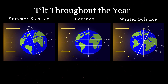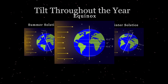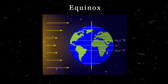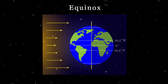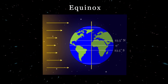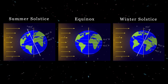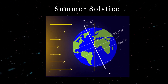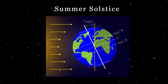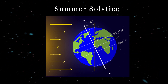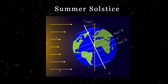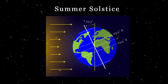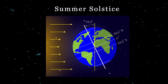If Earth was not tilted relative to its axis, then we'd have 12 hours of daylight and 12 hours of night every day on every part of Earth throughout the year, like we do on the equinox. But because of the 23.5 degree tilt of Earth relative to the orbital plane of the Sun-Earth system, the Sun does not set for an observer on the Arctic Circle on the summer solstice, and at the North Pole, the Sun does not set for six months.